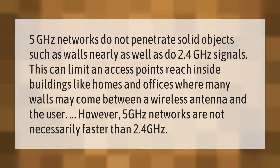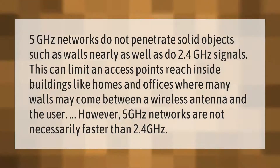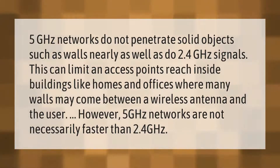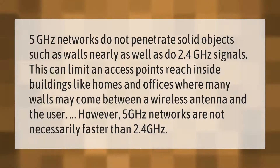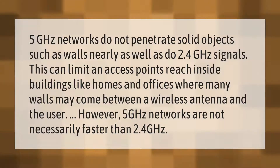5 gigahertz networks do not penetrate solid objects such as walls nearly as well as 2.4 gigahertz signals. This can limit an access point's reach inside buildings like homes and offices where many walls may come between a wireless antenna and the user. However, 5 gigahertz networks are not necessarily faster than 2.4 gigahertz.